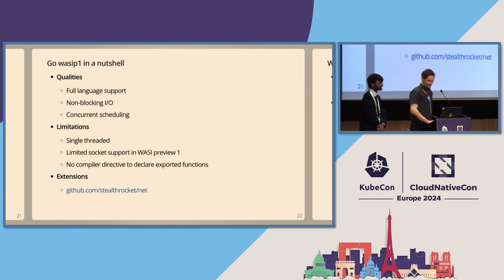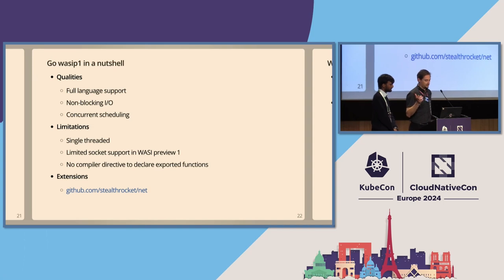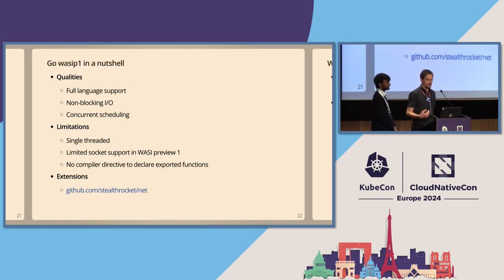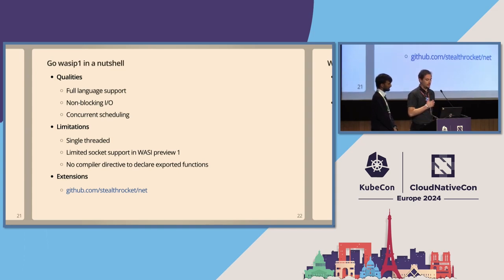Go is a language with native concurrency built in. When compiling to WASI, we use non-blocking file descriptors to integrate with the Go runtime and allow concurrent operations to make progress without blocking one another. This also integrates with other runtime features, like timers. So we get access to a very powerful programming tool.